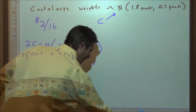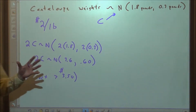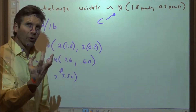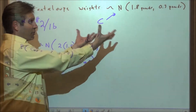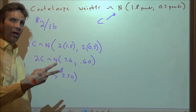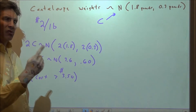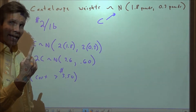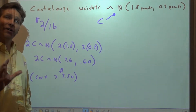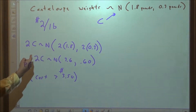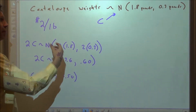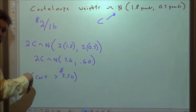Now I want to contrast that with something else. The problem we just did is a linear transformation — we selected one cantaloupe at a time and multiplied that weight by $2 to get the cost. So we only selected one cantaloupe, but we multiplied its weight by 2. That is a linear transformation, so we multiplied the mean by 2 and the standard deviation by 2 to change from weights to cost in dollars.